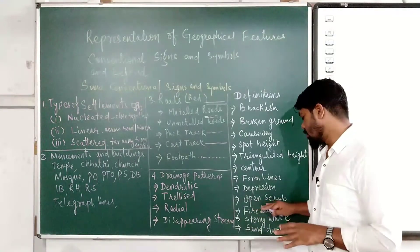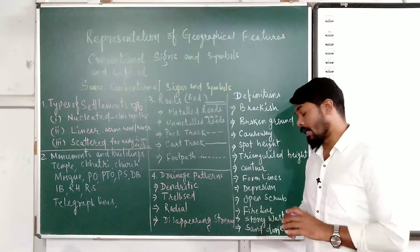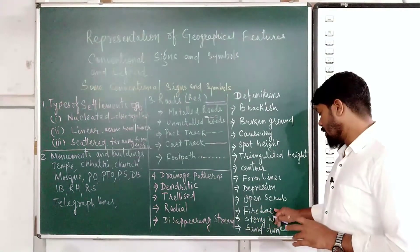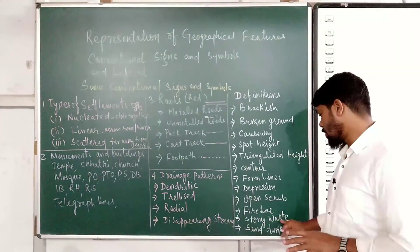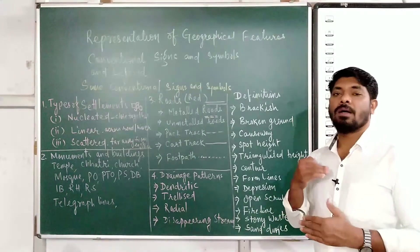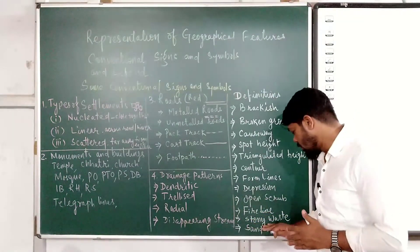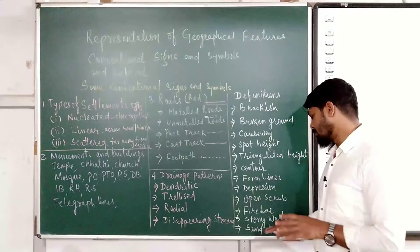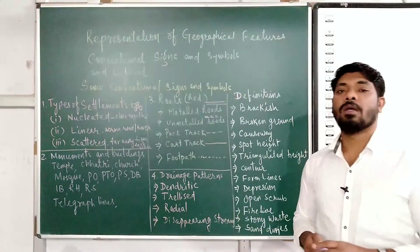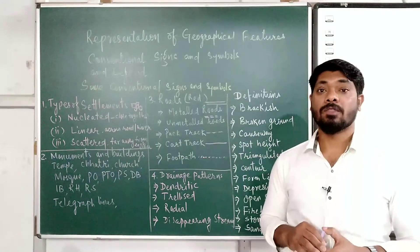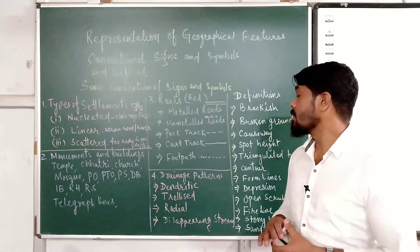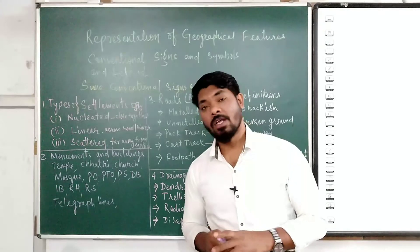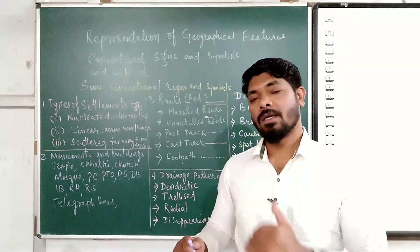Open scrub means an uncultivable or barren land area shown with white patches of color. Fire line is an important symbol shown on the map to prevent the spread of fire. Stony waste means an area covered with rocks and boulders, shown in white but printed as 'stony waste,' and is not suitable for cultivation. Sand dunes are shown with dotted brown color. These are the conventional signs and symbols you must learn and be familiar with for your 7th standard.